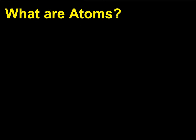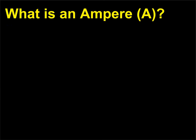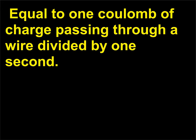What are atoms? They are the smallest piece into which an element can be divided and still retain its properties. What is an ampere (A)? It is a unit of measure of electric current equal to 1 coulomb of charge passing through a wire divided by 1 second.